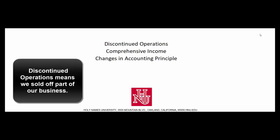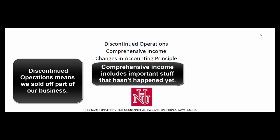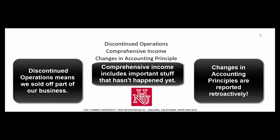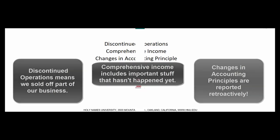Discontinued operations mean we sold something, and if it meets certain requirements, we break it out separately on the income statement so people will know not to include it when they predict next year's results. Comprehensive income means anything that moves shareholders up or down other than distribution to or investment by owners. And changes in accounting principle are applied retroactively.